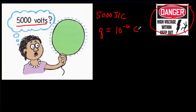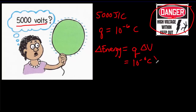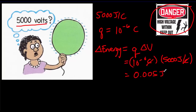If we want to figure out how much energy the child would absorb when getting a shock from the balloon, that energy equals Q times delta V — the charge, 10 to the minus 6 coulombs, multiplied by the voltage, 5,000 joules per coulomb. Coulombs cancel out, and the amount of energy absorbed is only 0.005 joules — not enough to cross the pain threshold. A typical household socket is about 120 volts, and you can electrocute yourself because the wall socket can deliver a continuous stream of current, a lot of charge, and therefore a lot of energy to your body.